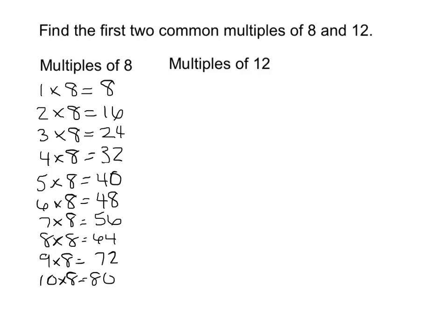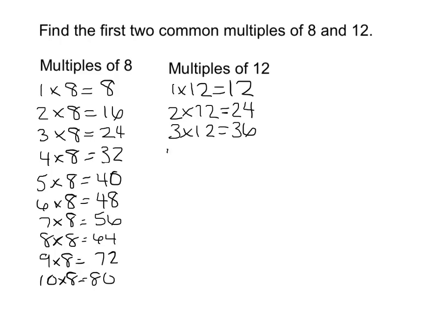So my multiples of 12, if I have 1 times 12 will give you 12, so that's your first one. 2 times 12 is 24. 3 times 12 is 36.